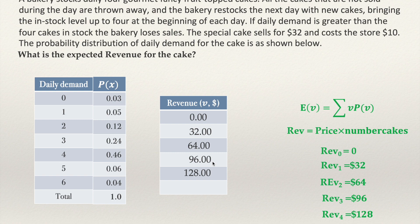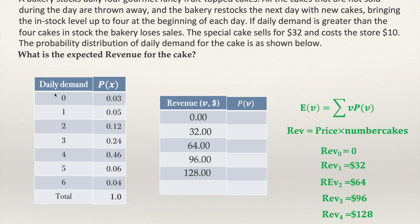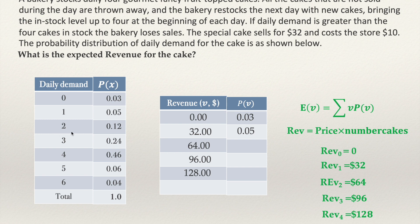To get a probability distribution, we also need the probability of each revenue value. The probability that revenue is $0 is the same as the probability that demand is zero — meaning no one wanted a cake that day — which is 0.03. There is a 0.05 probability that the store sells one cake, so revenue is $32 with probability 0.05. The probability that revenue is $64 is the probability that the store sells two cakes, which is 0.12.